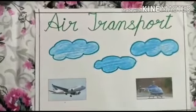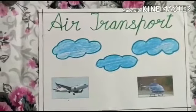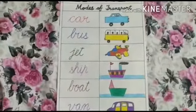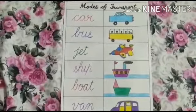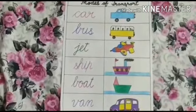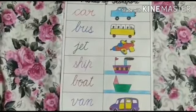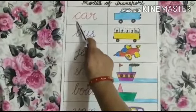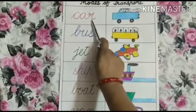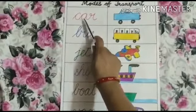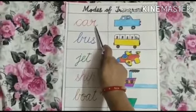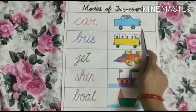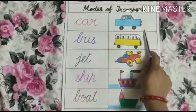And you know, aeroplane is the fastest means of transport. Now I am showing you this chart. In this chart, ma'am has drawn pictures of different types of modes of transport. Now first is car. Can you tell me which type of transport is this? This is land transport. Very good.